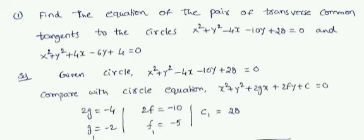Compare the given circle with the standard equation x² + y² + 2gx + 2fy + c = 0. Comparing, we get 2g = −4, so g₁ = −2. Similarly, 2f = −10, so f₁ = −5. And c₁ = 28.